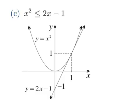So for this question, we want to find the values of x for which x squared is less than 2x minus 1. Now, see here that this parabola is y equals x squared, and this line is y equals 2x minus 1.